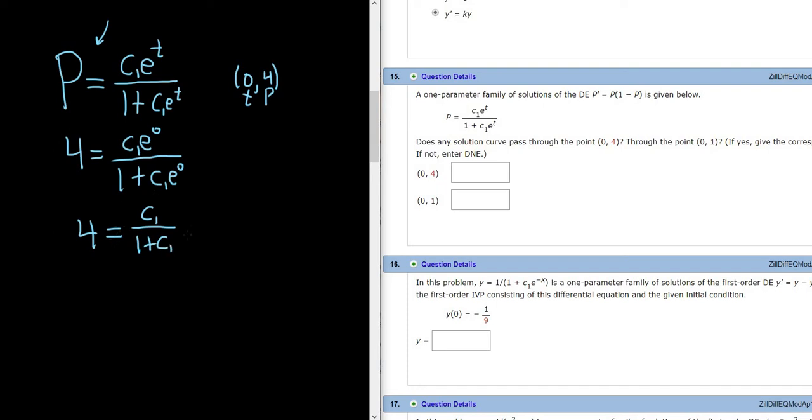Let's go ahead and multiply both sides by (1 plus C1). These will cancel. And I guess we can distribute this 4. So we have 4 plus 4C1 equals C1. Now we can subtract the C1 from both sides.